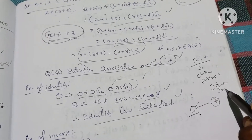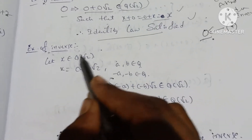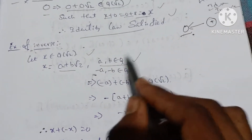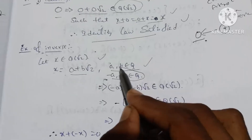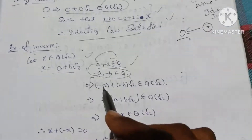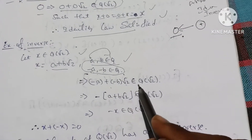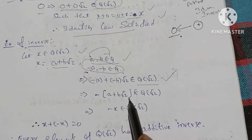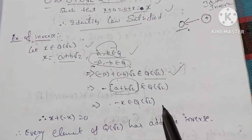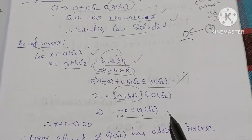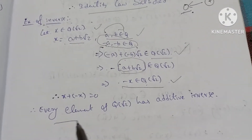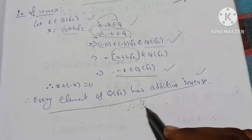Existence of inverse: Let x belong to Q(√2), x equal a plus b root 2. Since a and b belong to Q, minus a and minus b also belong to Q. So minus a plus minus b root 2 belongs to Q(√2), and this equals minus x. Therefore x plus (minus x) equals 0, so every element of Q(√2) has an additive inverse. The inverse law is satisfied.